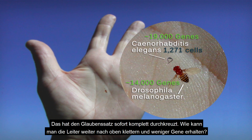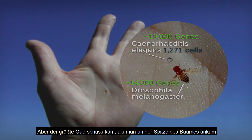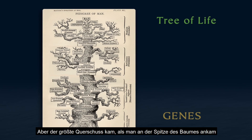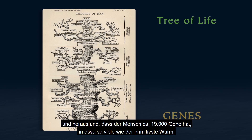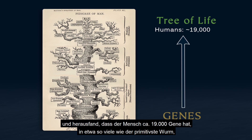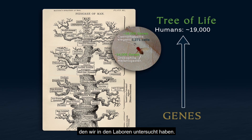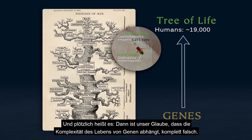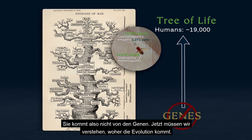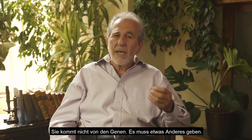This threw a monkey wrench into the belief right away — how can you go higher up the scale and end up with fewer genes? But the biggest monkey wrench is when we got to the top of the tree and found that humans have 19,000 genes, essentially the same number as the most primitive worm studied in our laboratory. All of a sudden it says our belief that complexity in life is due to genes is totally false. It doesn't come from the genes. Where is evolution coming from if not the genes? There's something else.